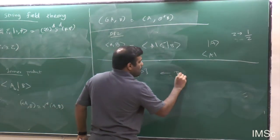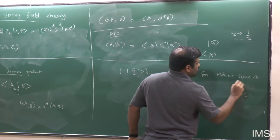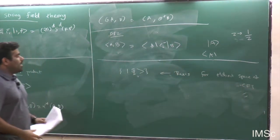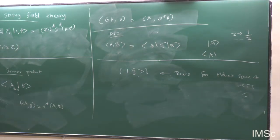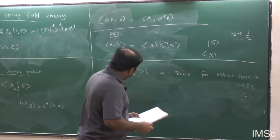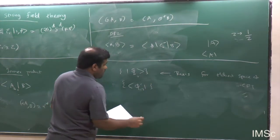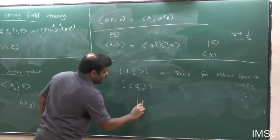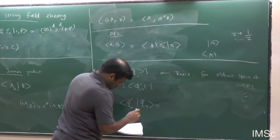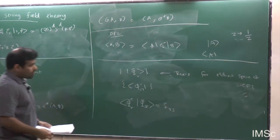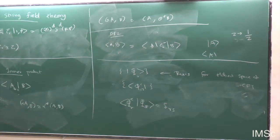You can define a basis for the Hilbert space of world sheet CFT consisting of all states from the matter sector, ghost sector, and also the momentum piece. You can also define a set of conjugate states φ^C_R such that the inner product ⟨φ_R | φ^C_S⟩ = δ_{RS}. These states φ^C_R are conjugate to φ_R — this is the conjugate basis.